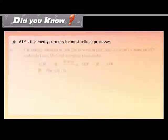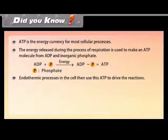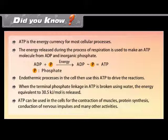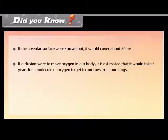Did you know? ATP is the energy currency for most cellular processes. The energy released during respiration is used to make ATP from ADP and inorganic phosphate. When the terminal phosphate linkage in ATP is broken using water, energy equivalent to 30.5 kJ per mol is released. ATP can be used in cells for muscle contraction, protein synthesis, conduction of nervous impulses, and many other activities. If the alveolar surface were spread out, it would cover about 80 m². If diffusion alone were to move oxygen, it would take an estimated 3 years for a molecule of oxygen to travel from the lungs to the toes.